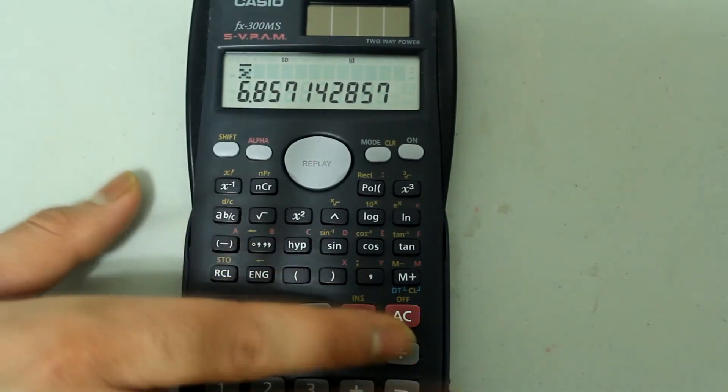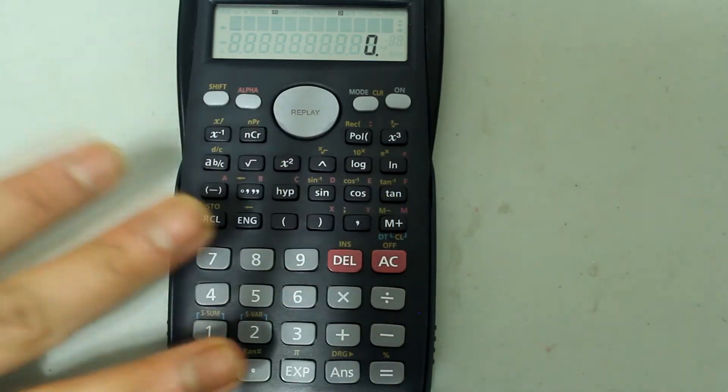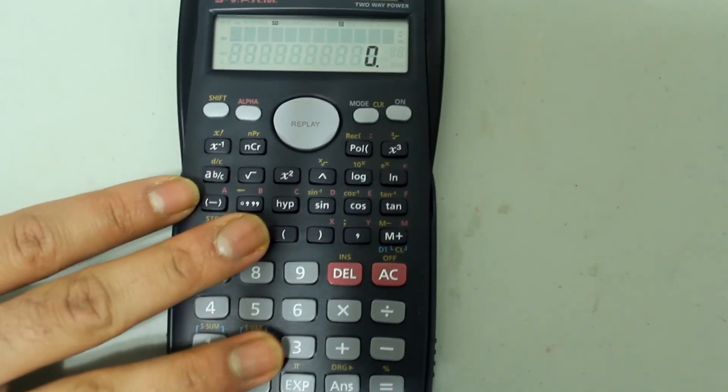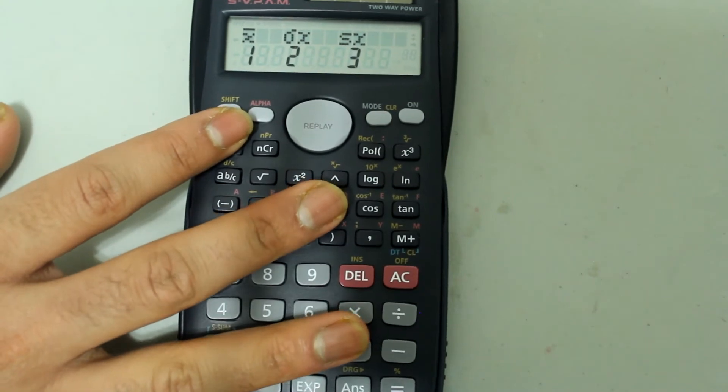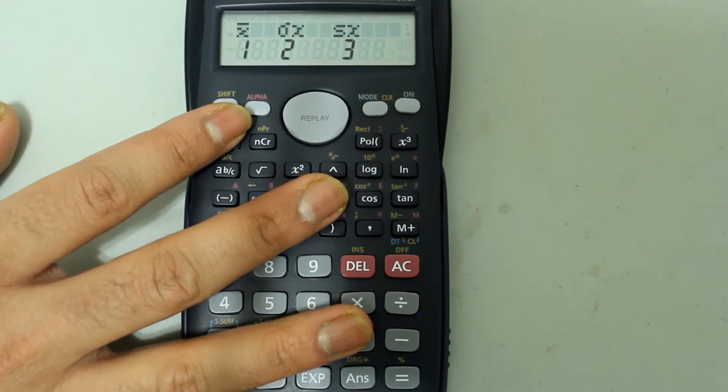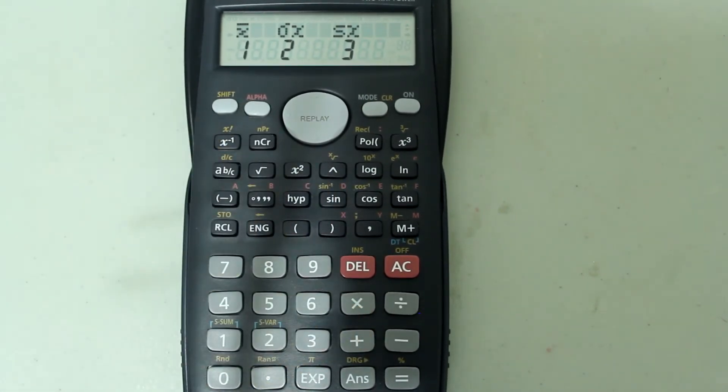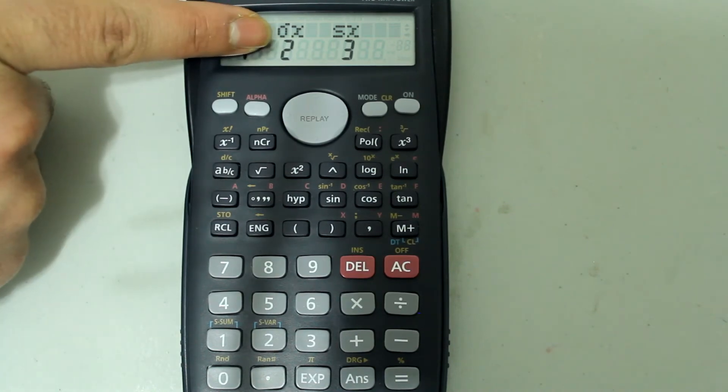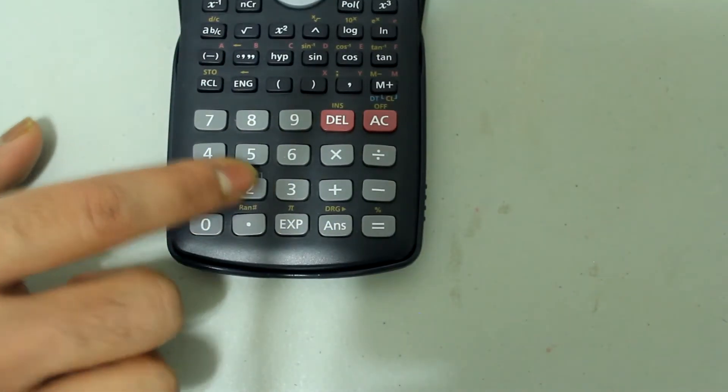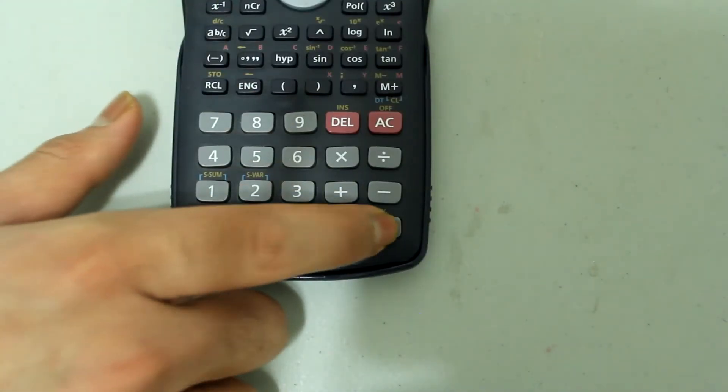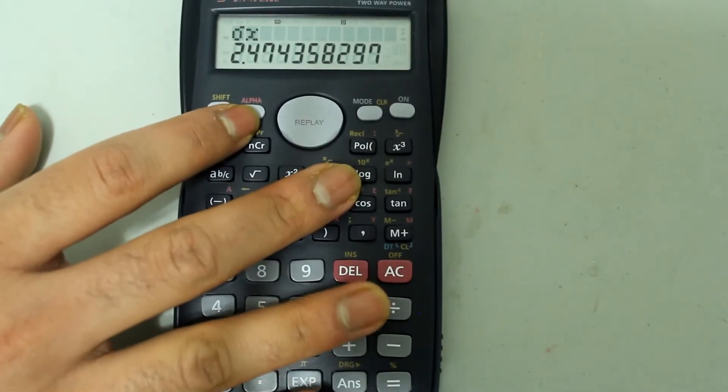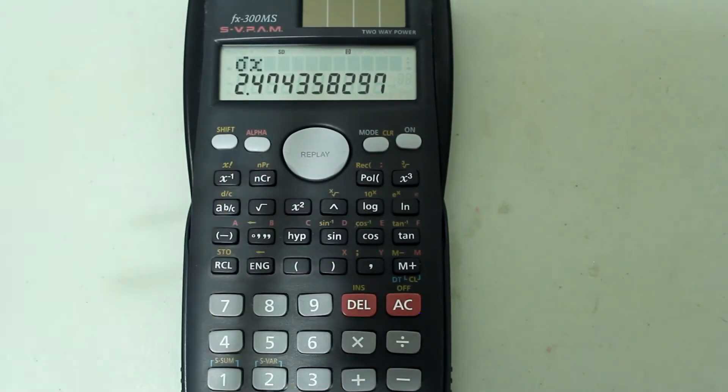Let's clear this now, and since the data is already entered we don't need to re-enter it, so press shift and the number 2 again to select S var. This time we're going to find the population standard deviation, which is the second option. So press 2 on the number pad, and this pops up, and press enter and we get the population standard deviation.